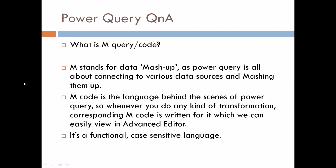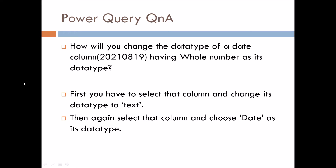What is M query or M code? M stands for mashup — a mashup language — because Power Query is all about connecting to various data sources and mashing them up. M code is the language behind the scenes of Power Query. Whenever we do any kind of transformation, corresponding M code is written for it, which we can easily view in the Advanced Editor. It is a functional, case-sensitive language.